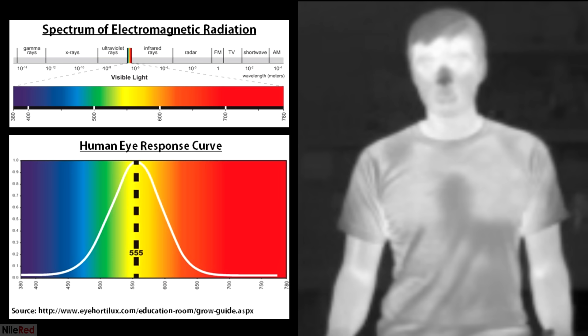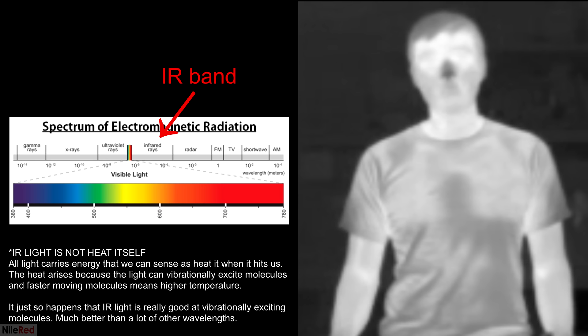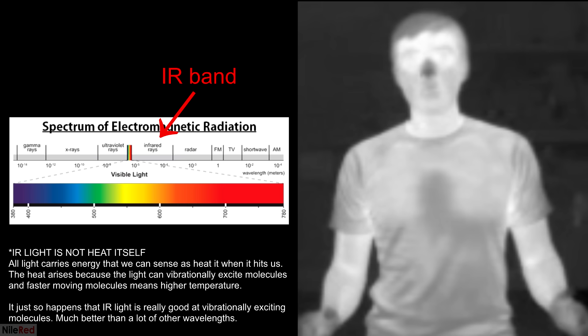Humans and most other animals are only able to see a very narrow band of electromagnetic radiation. Some animals can see slightly deeper into UV or IR, but their ability is pretty limited. Infrared is just above the visible band, so we can't see it, but we are able to sense it as heat.